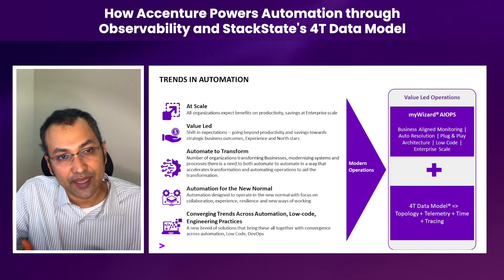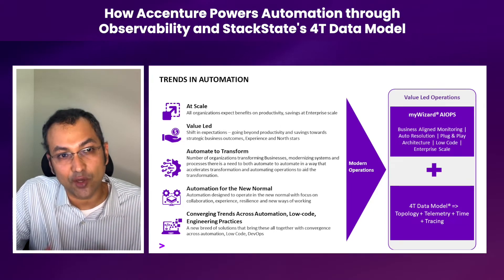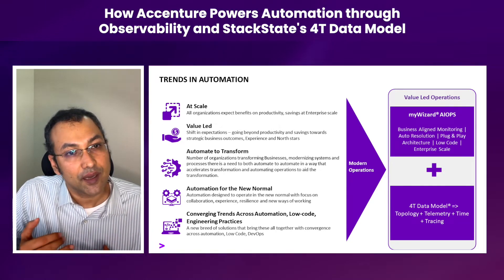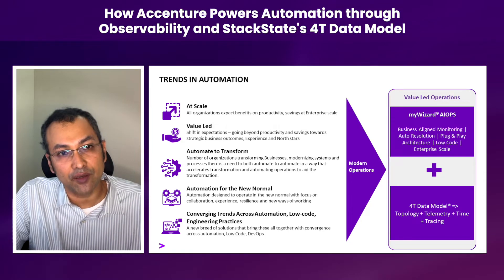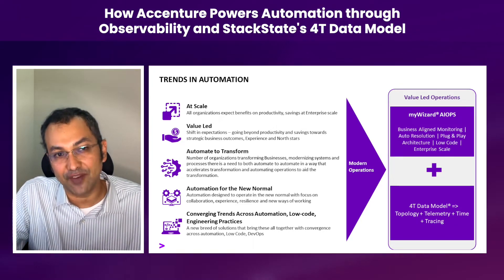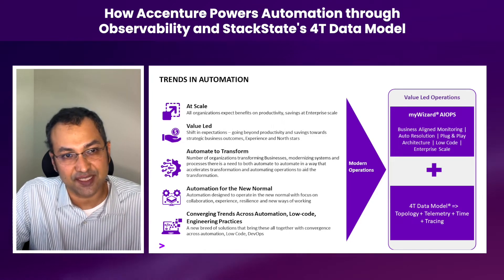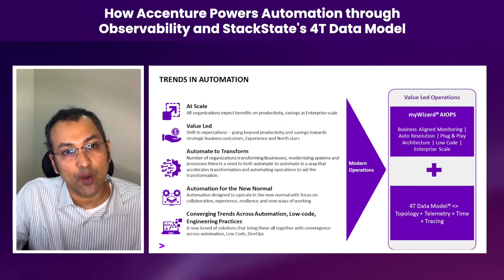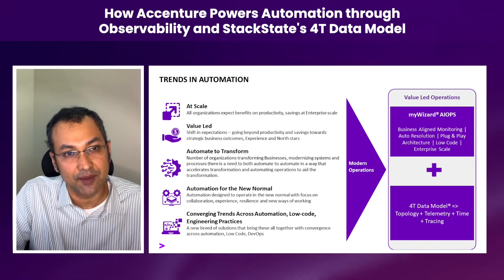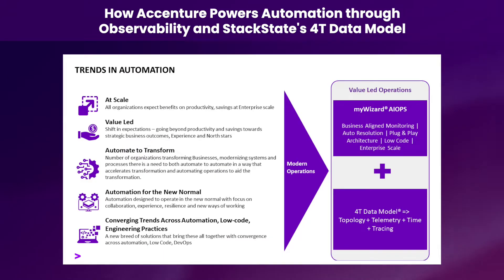The third key theme, especially in recent times, is Automate to Transform. The focus is no longer only on automation of how we do management of our applications, infrastructure, and business processes — it is also about how we help our clients do transformative change. The way we automate should accelerate the way in which we change: doing releases faster, implementing process changes faster. We need specific automation assets and capability around this, and equally importantly, the way we automate applications and infrastructure needs to aid the change and not come in the way.